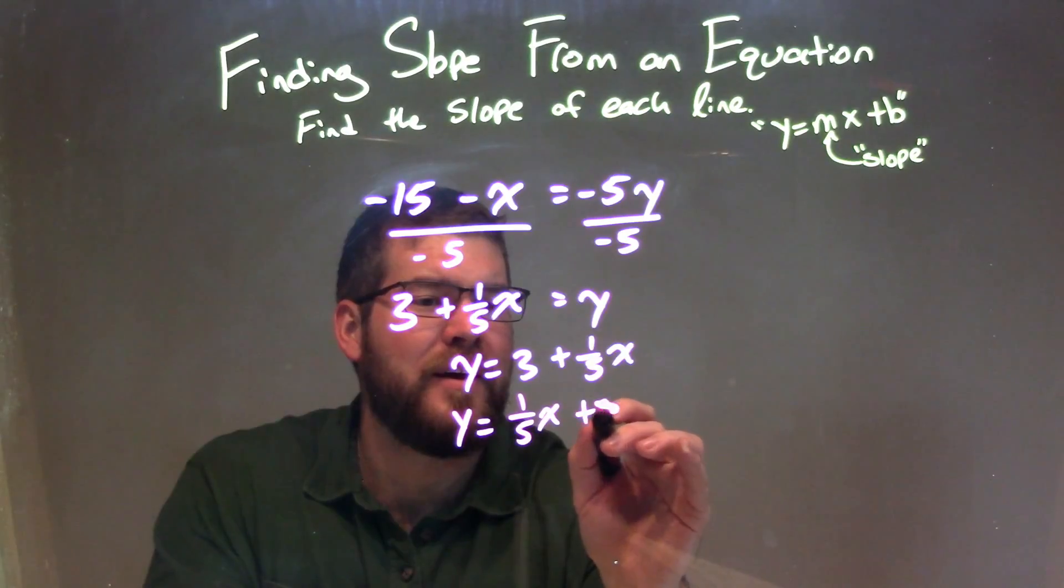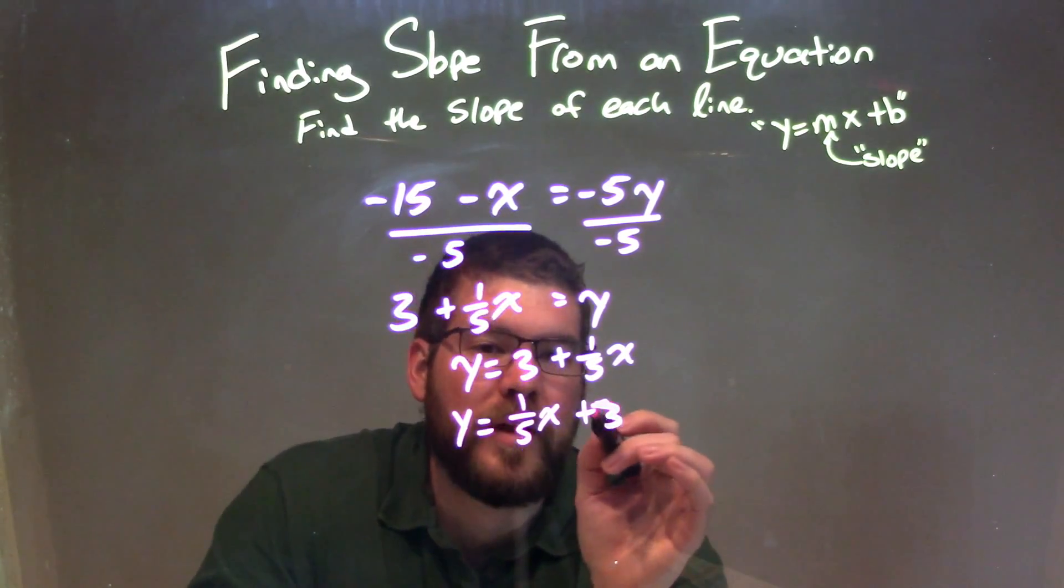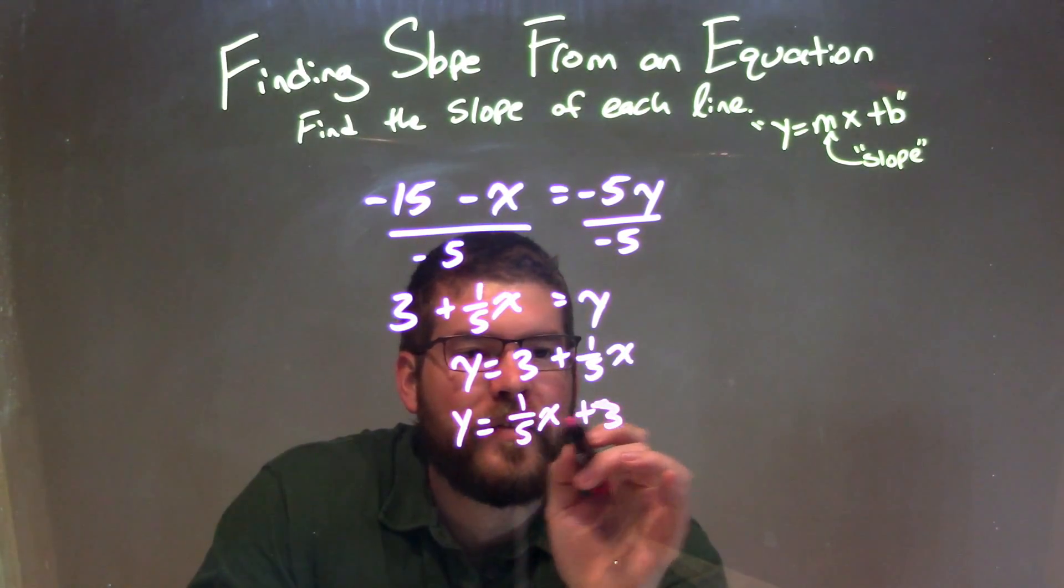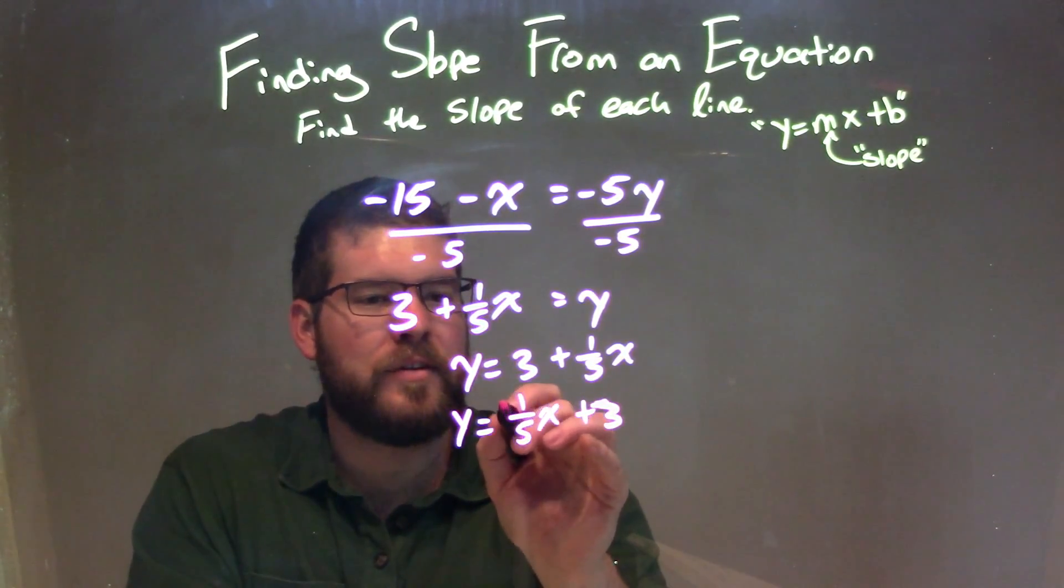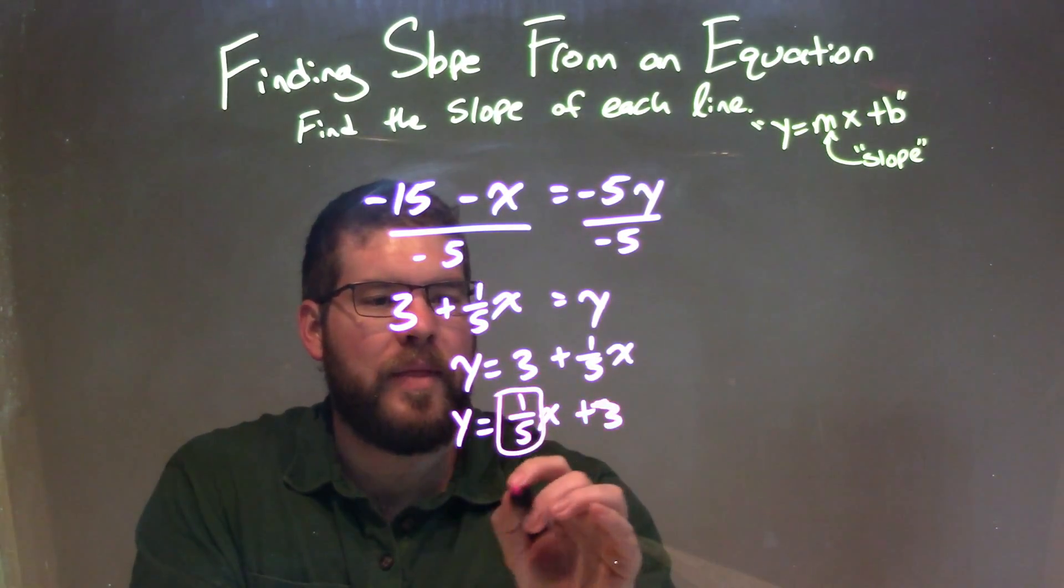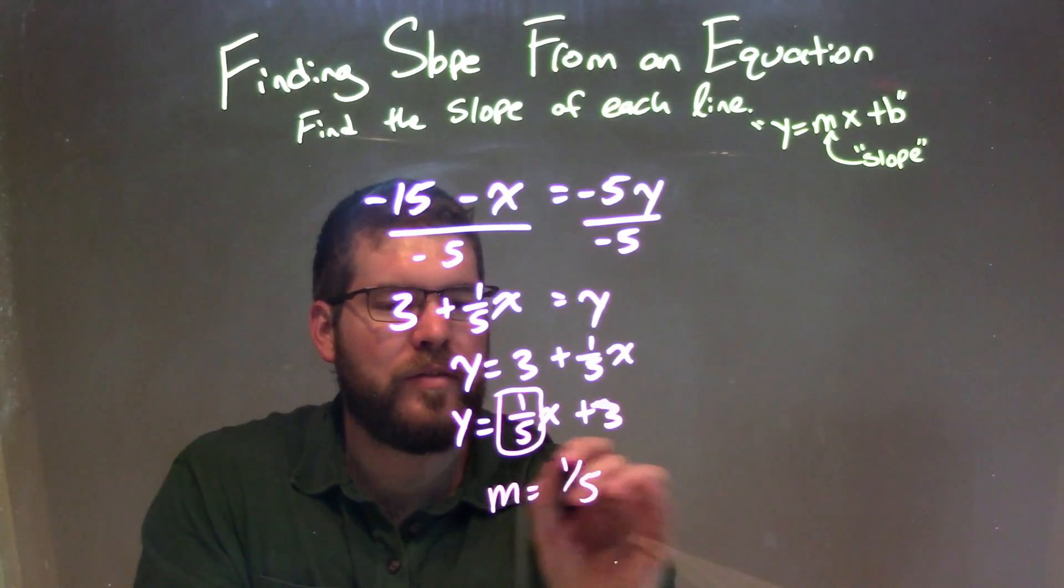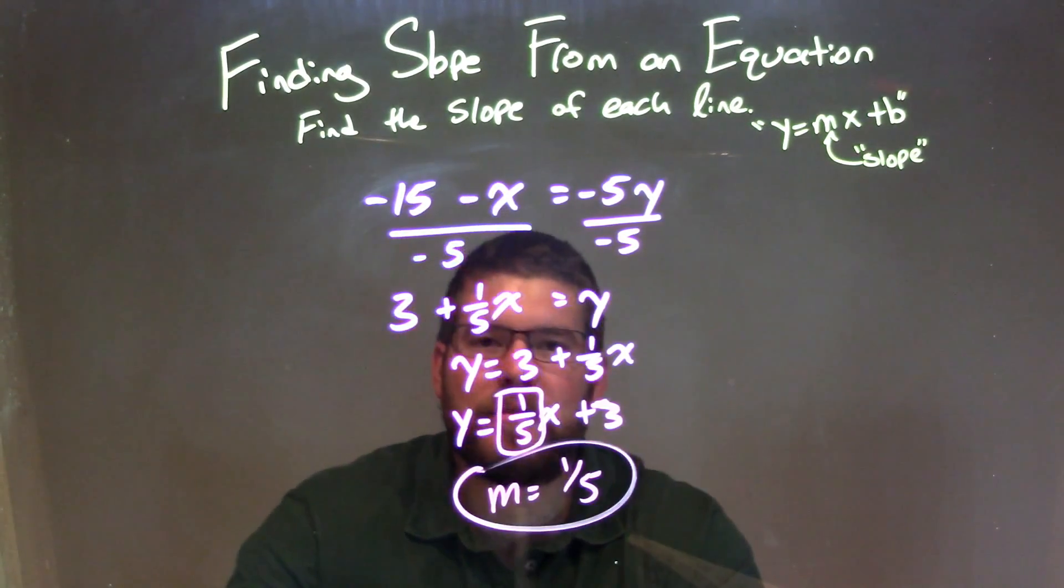So y equals one-fifth x plus 3. Our slope is the coefficient in front of x, a little easier to see now. Right there, our m value. So we have m equals positive one-fifth, and that is our final answer.